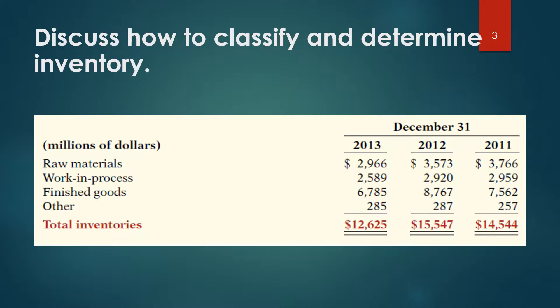In a manufacturing company, some inventory may not yet be ready for sale. As a result, manufacturers usually classify inventory into three categories: finished goods, work-in-process, and raw materials. Finished goods inventory is manufactured items that are completed and ready for sale. Work-in-process is that portion of manufactured inventory placed into the production process but not yet complete. Raw materials are the basic goods that will be used in production but have not yet been placed into production.